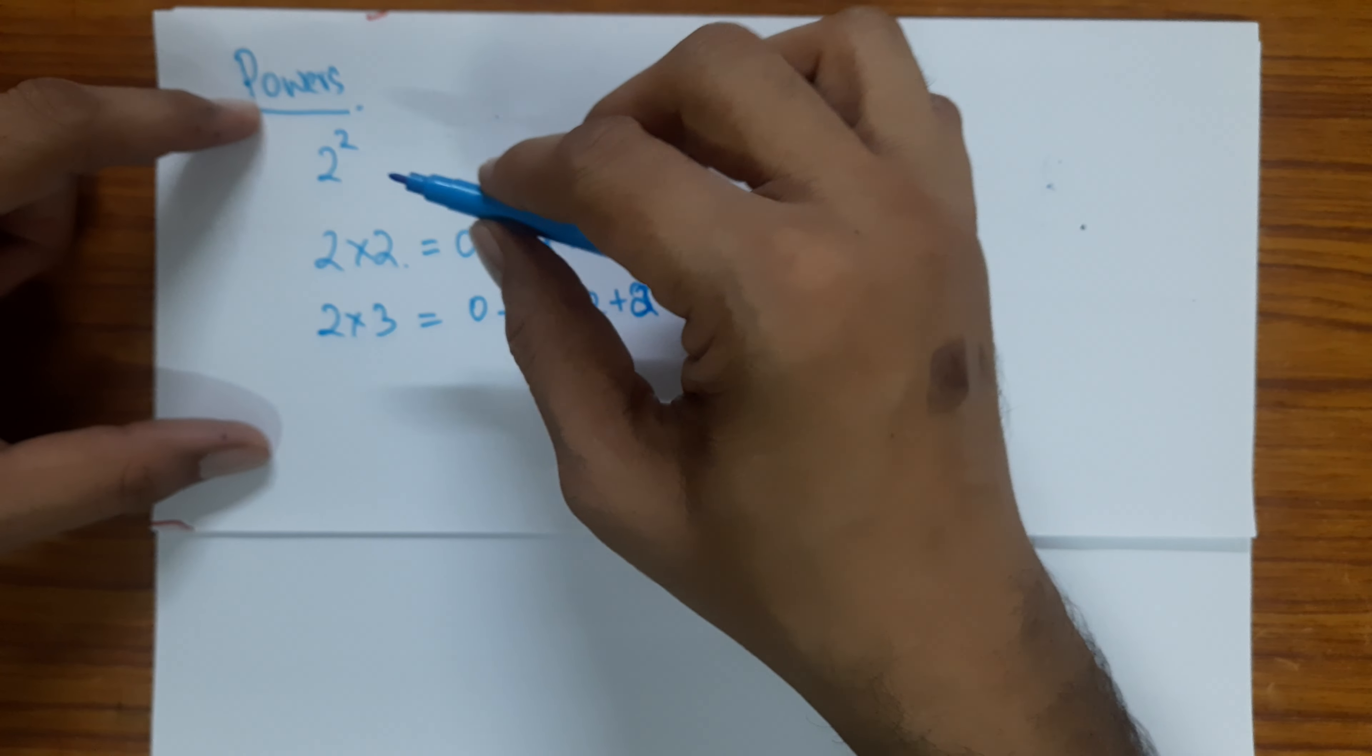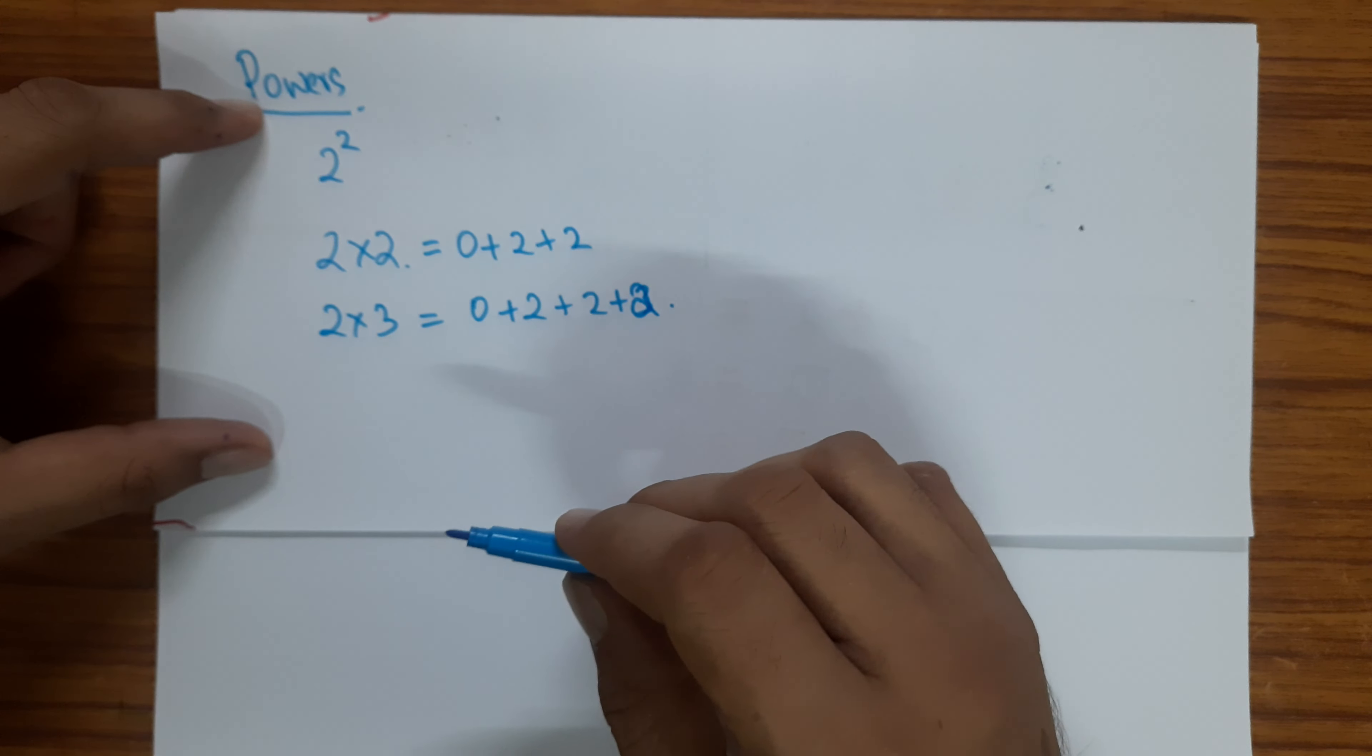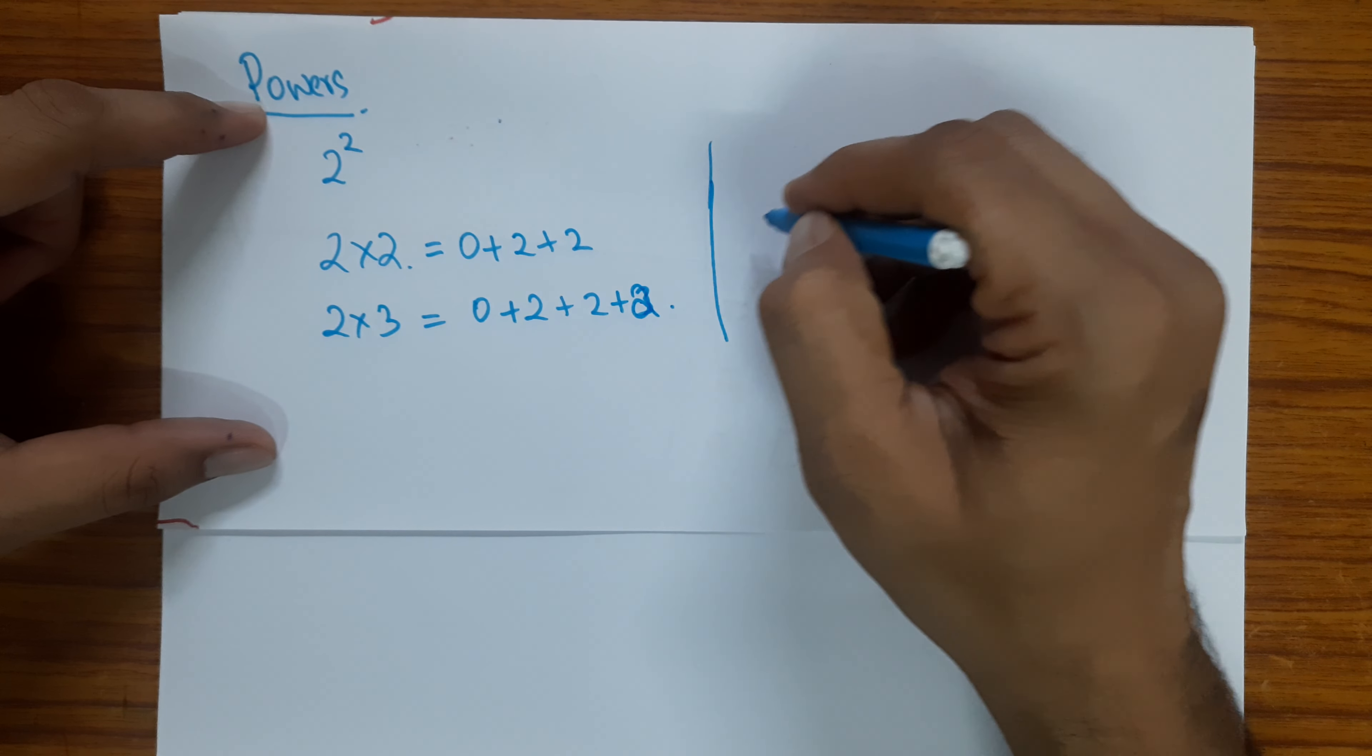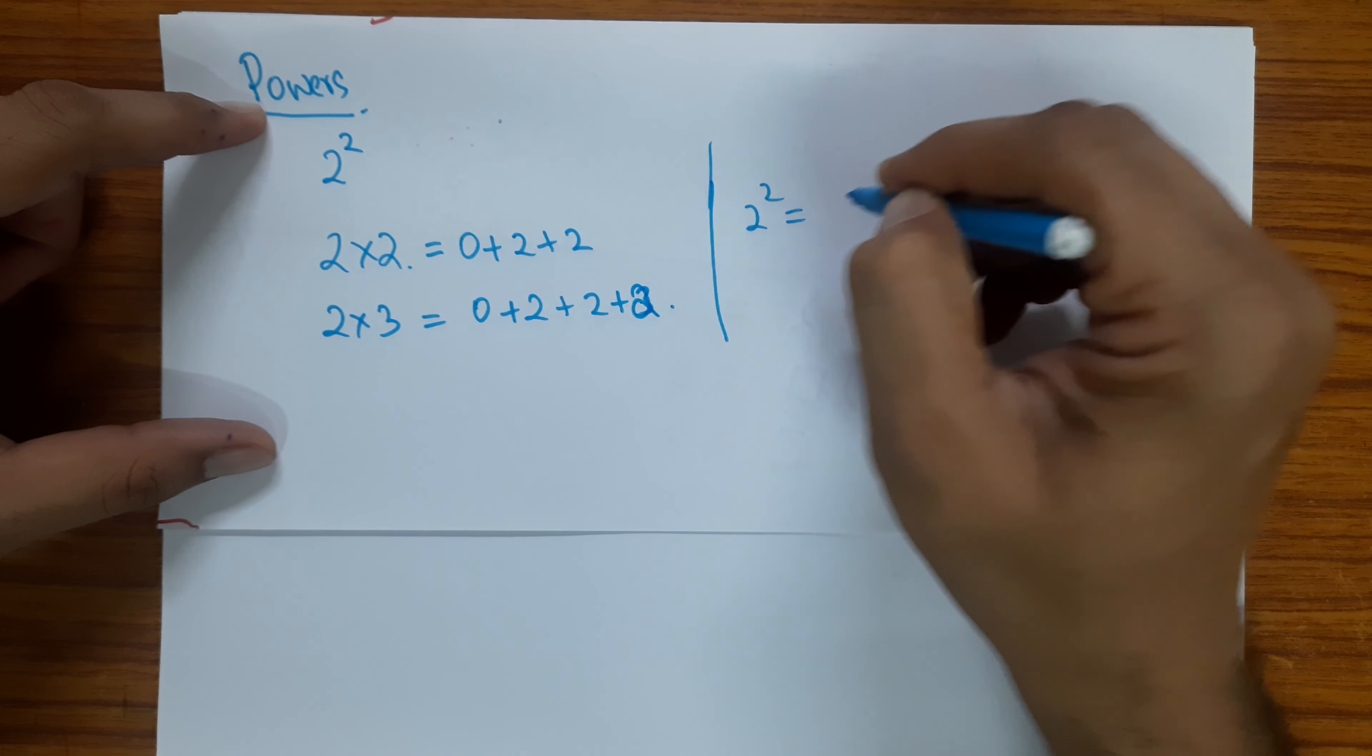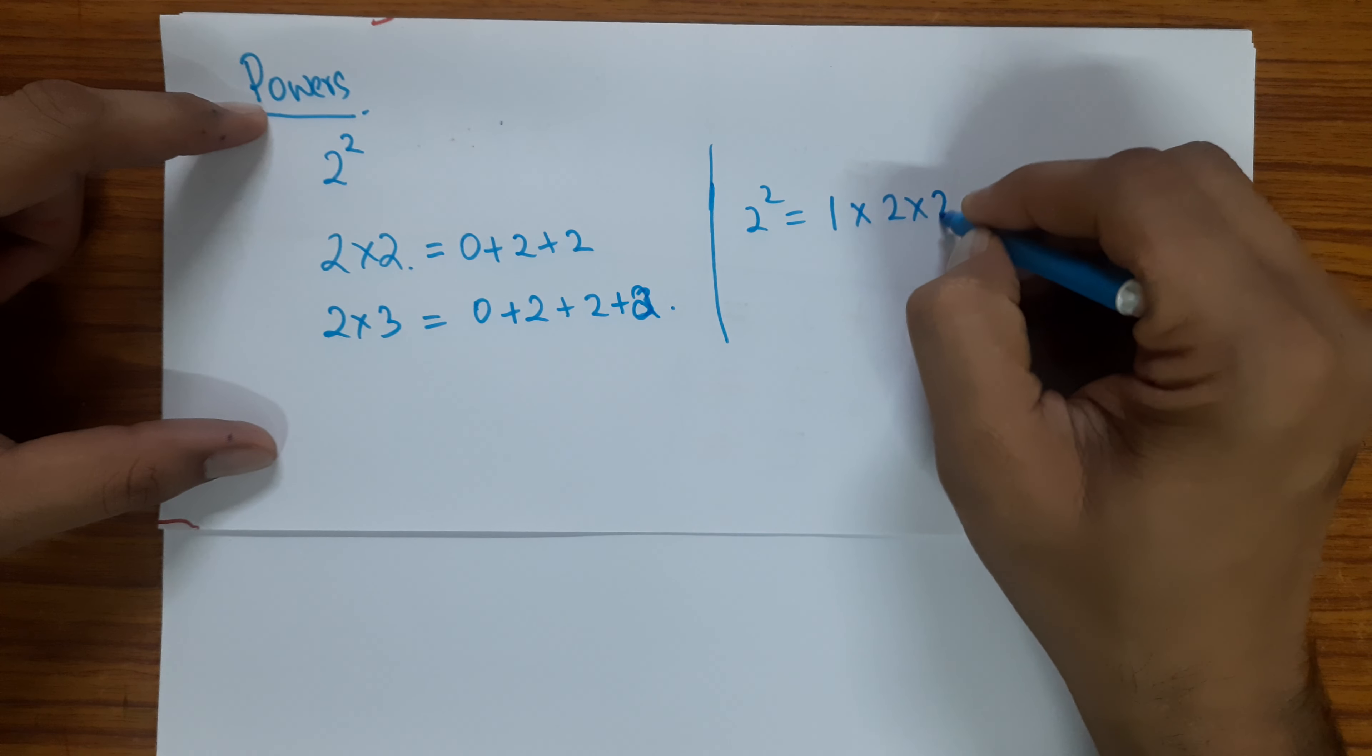So, same way when we are talking about powers as a shortcut for multiple multiplications, it's important to use a multiplicative identity. So 2 power 2 is, the multiplicative identity is 1, I am multiplying 1 with 2 2 times.